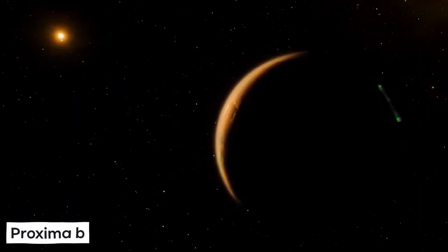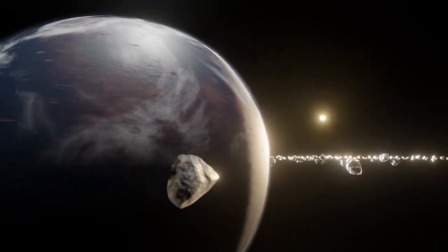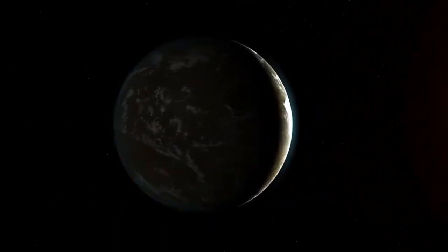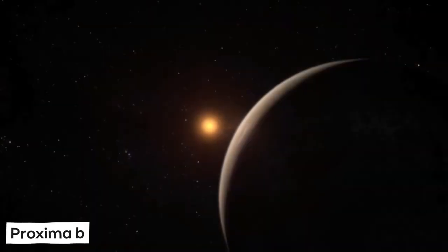If Proxima b has an atmosphere, the next step will be to analyze its composition. The presence of gases like oxygen, water vapor, and methane in particular could indicate the existence of habitable conditions, if not actual living things.